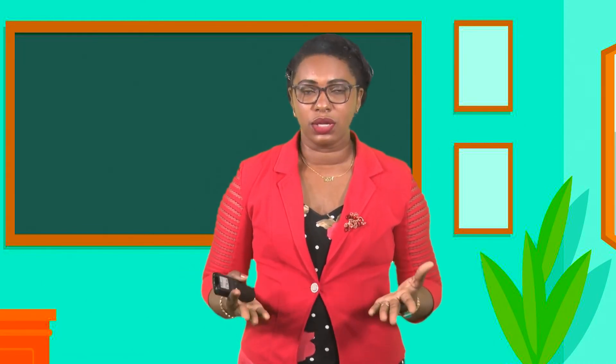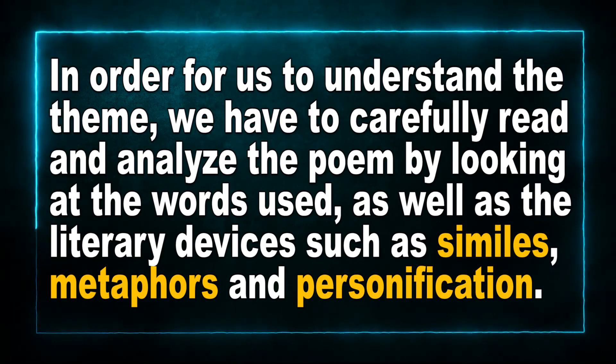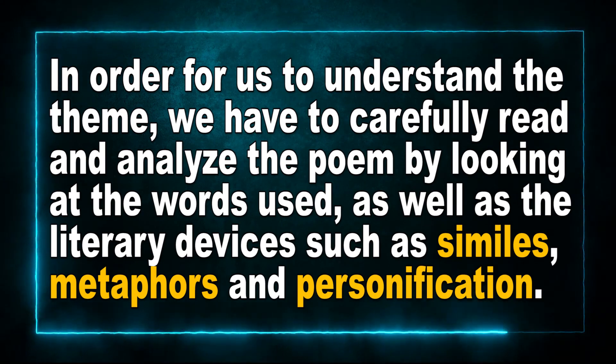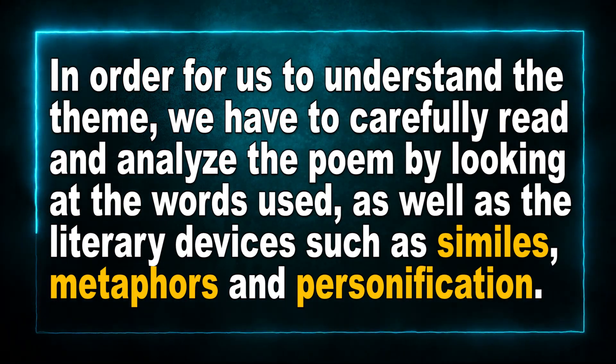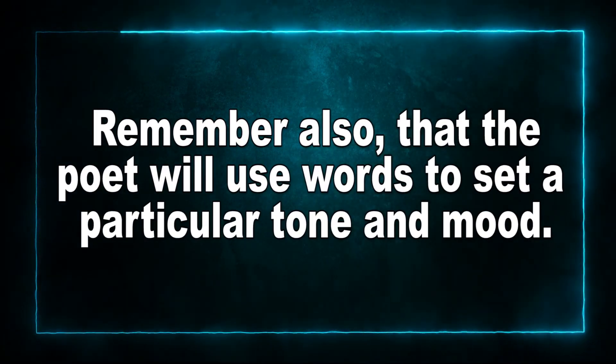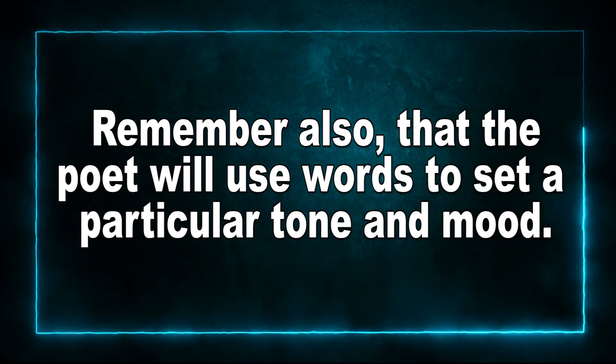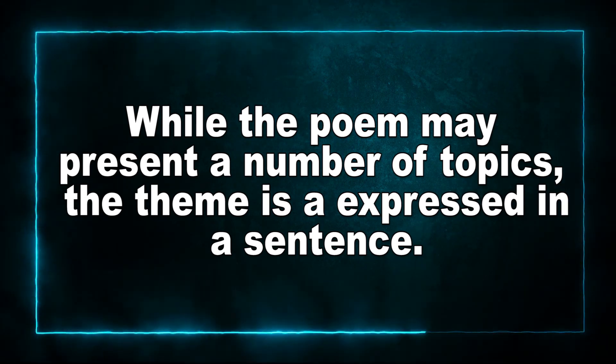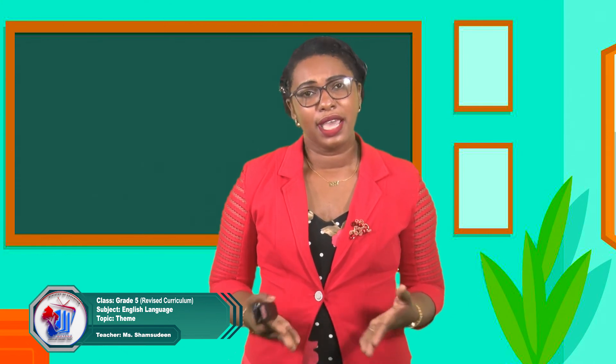Remember that when we talk about the theme of a poem, we are referring to the message or central idea that the poet wants us to understand. To identify the theme, we must carefully read and analyze the poem by looking at the words used as well as literary devices such as similes, metaphors, and personification. The poet uses words to set a particular tone and mood, and while some themes are clearly stated, some are implied, so read carefully. The theme is expressed in a sentence, not just a single word. Now think about the lesson or message you want to share, and write your own poem.